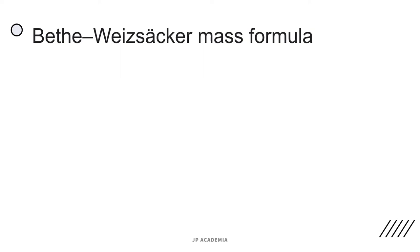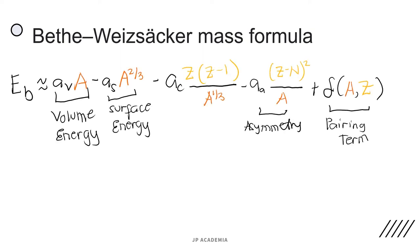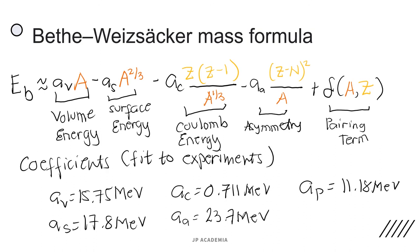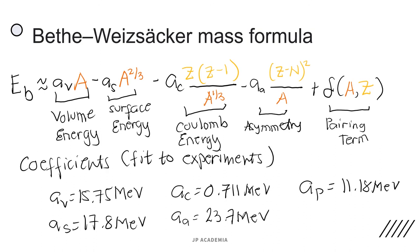Now we have the Bethe-Weizsäcker mass formula, also called the semi-empirical mass formula, derived using the liquid drop model with these five terms: volume, surface, Coulomb, asymmetry, and pairing. The coefficients based on fitting to experimental data are: Av equals 15.75 MeV, As equals 17.8 MeV, Ac equals 0.711 MeV, A_A for asymmetry equals 23.7 MeV, and Ap for the pairing term equals 11.18. The semi-empirical mass formula provides a good fit to heavier nuclei and a poor fit to very light nuclei, especially helium-4. For light nuclei, it is usually better to use a model that takes shell structure into account.